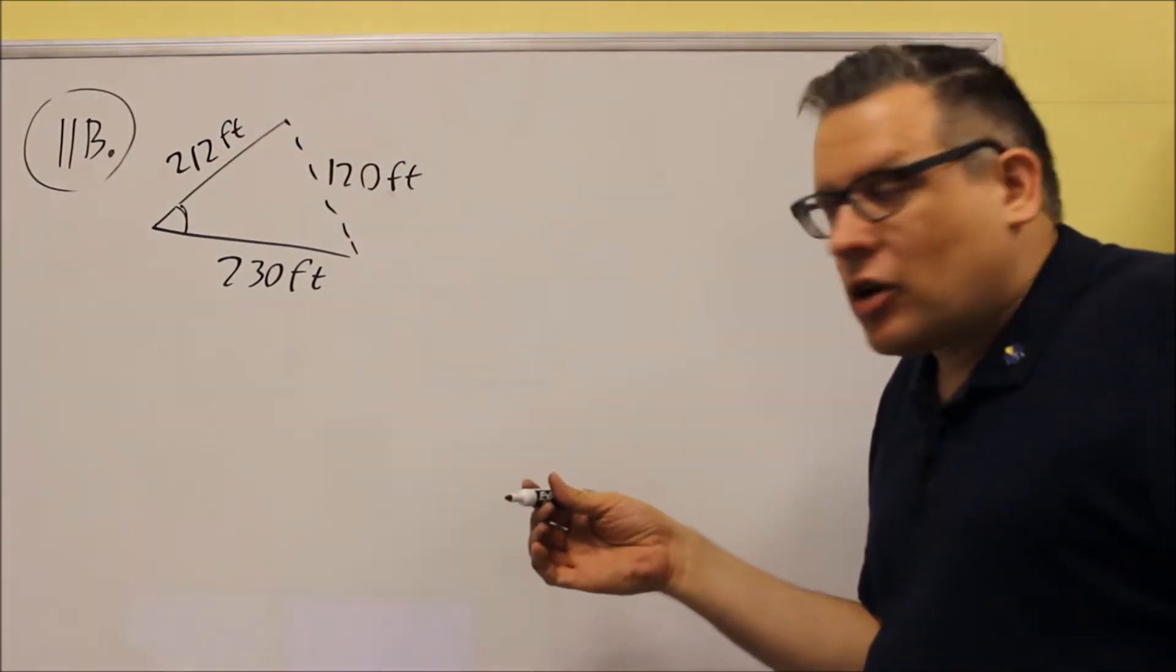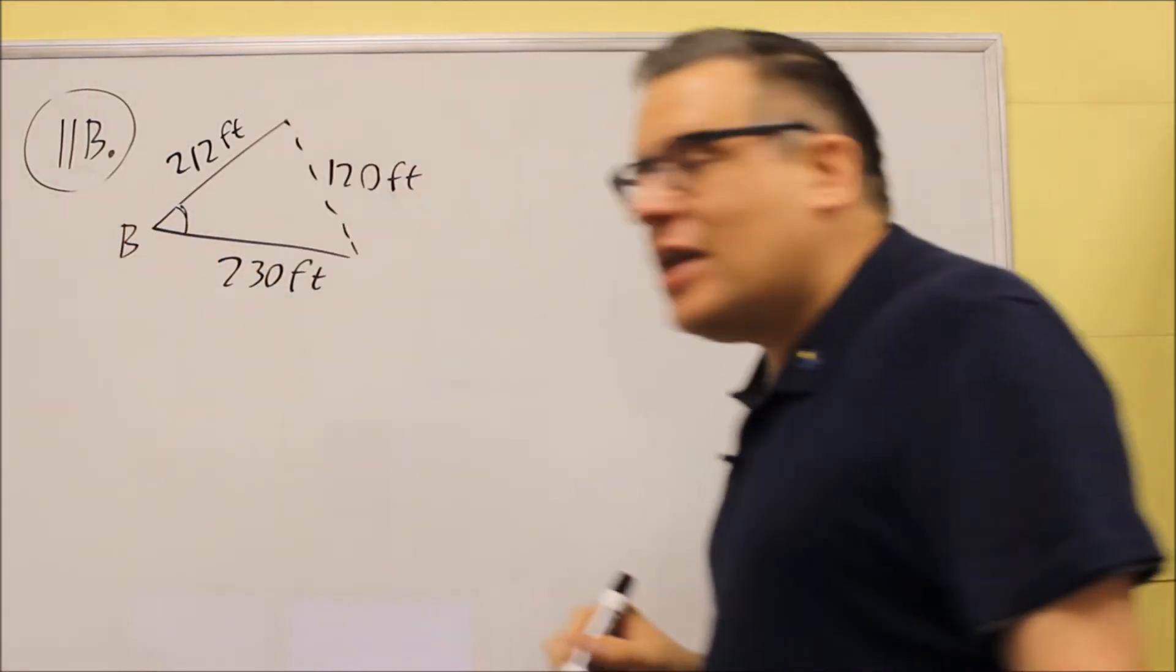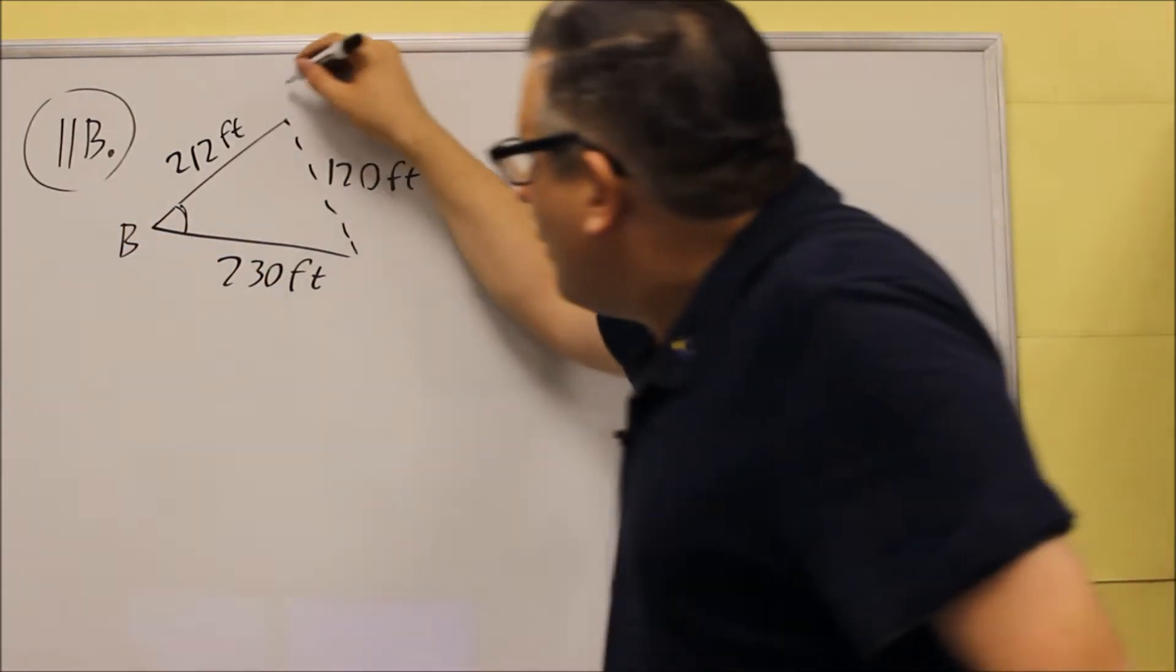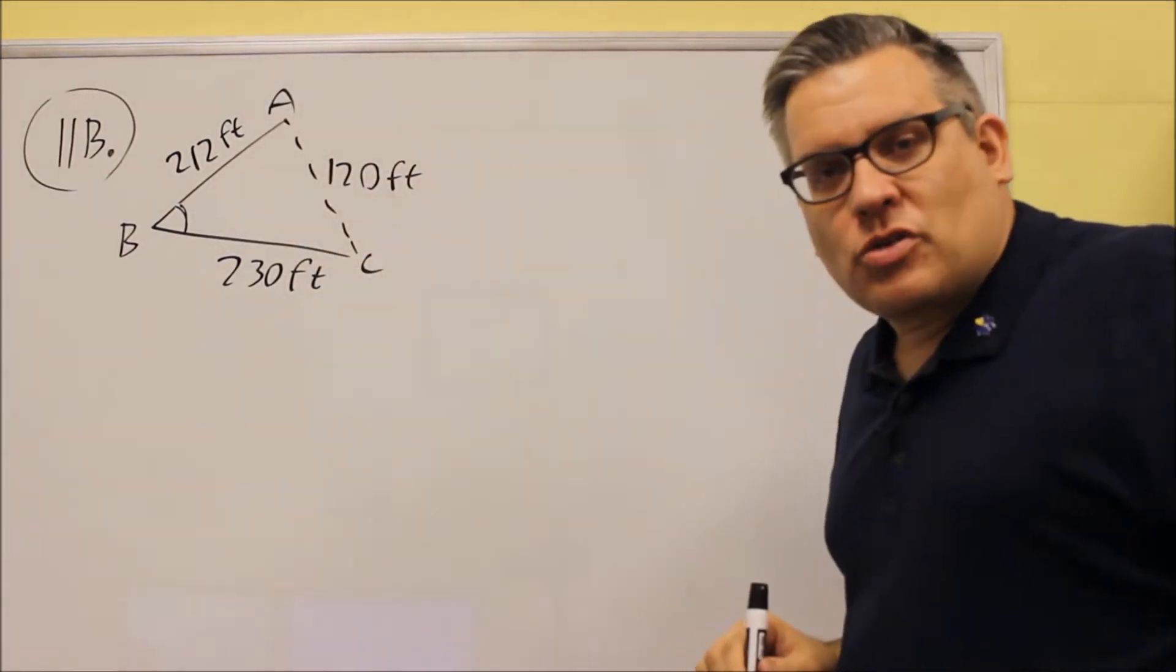Now, before we do law of cosines, we need to label the drawing. I'm going to put a B here, B for barge, and then A and C, it doesn't matter where we put those. So, I'm going to label the triangle this way.